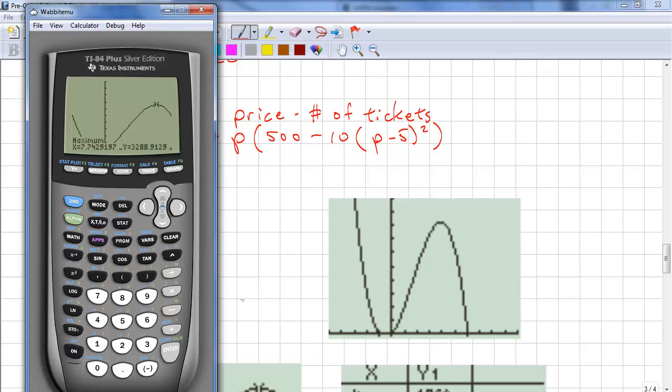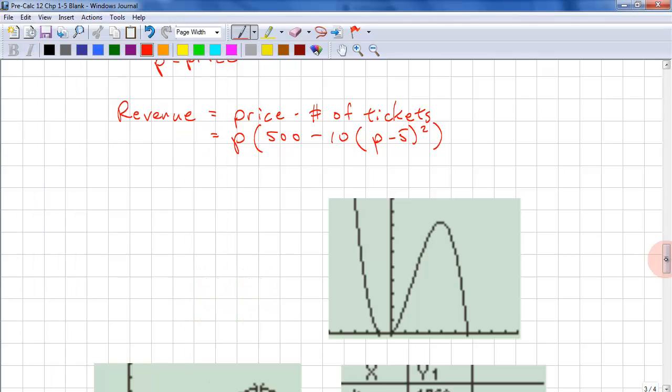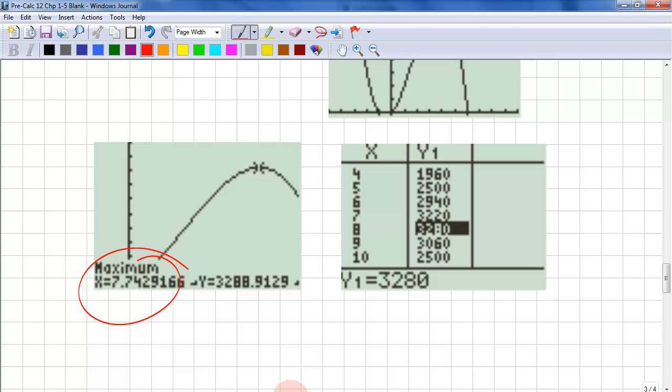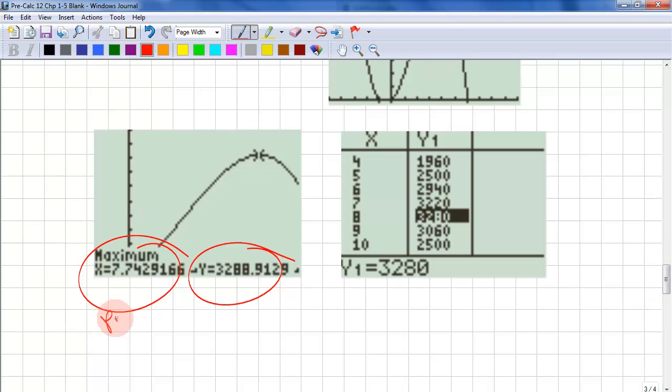Okay, so our answer is 7.74. And that matches down here. Our dollar value is $32.88. This is price. And this is revenue.